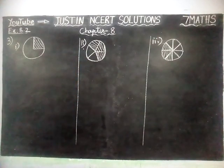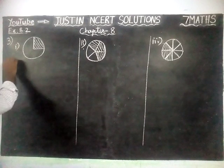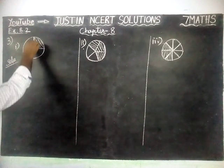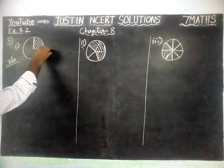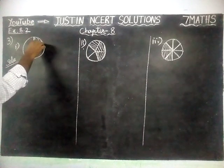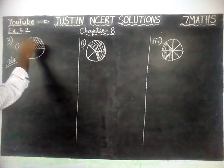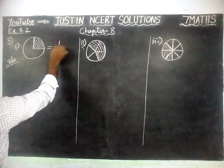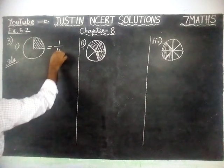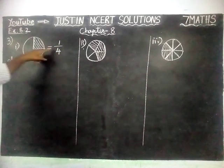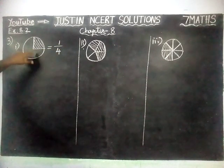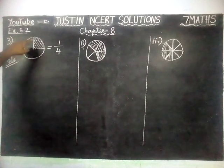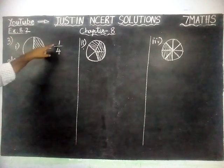First we are going to find fractions for the given questions. Here, this is exactly like a quadrant. Quadrant means this is only one quadrant; the remaining three quadrants are there. So a circle has 4 quadrants; out of 4, 1 is colored. So this is equal to 1 divided by 4.